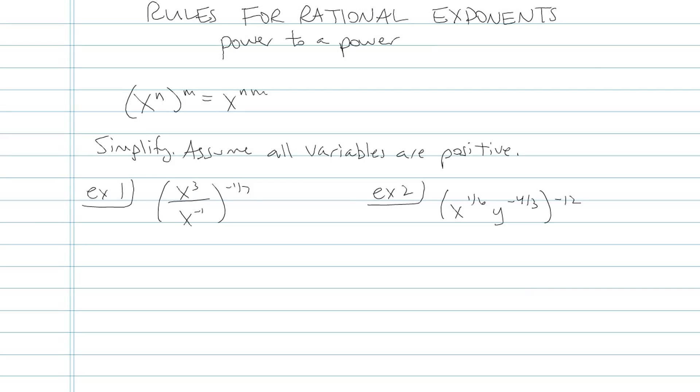Let's go ahead and do some examples, assuming all variables are positive so I don't have to worry about absolute value. In example one, I could go ahead and do negative one-seventh times each of those exponents. But I want to simplify the inside. Like the inside, it looks like those variables just are crying out to be subtracted.